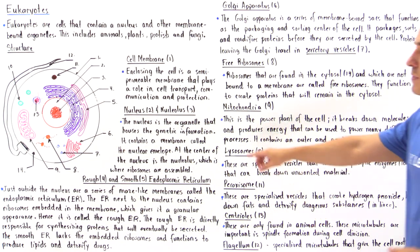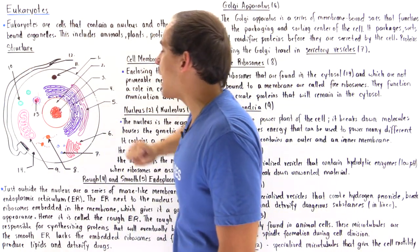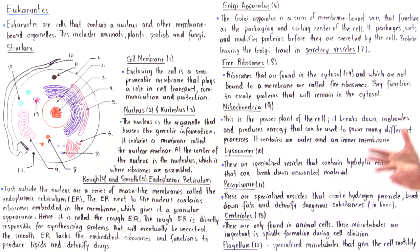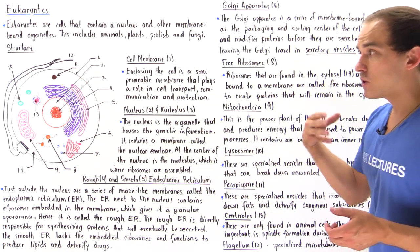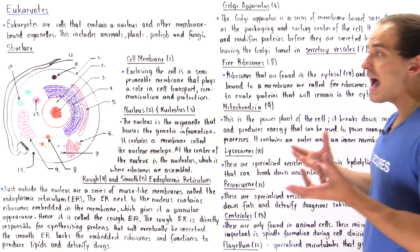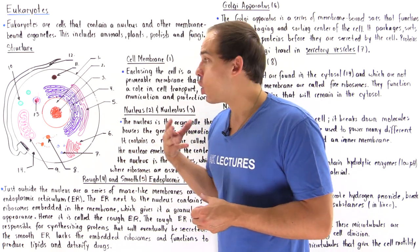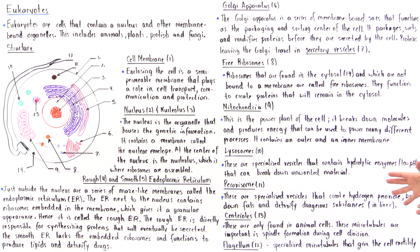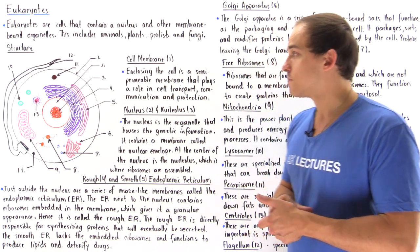Finally, there is the flagellum — a tail-like structure that gives the cell motility, the ability to move. Both prokaryotes and eukaryotes have their own type of flagella that moves in its own way and is composed of its own type of protein. We'll discuss that in more detail in a different lecture.